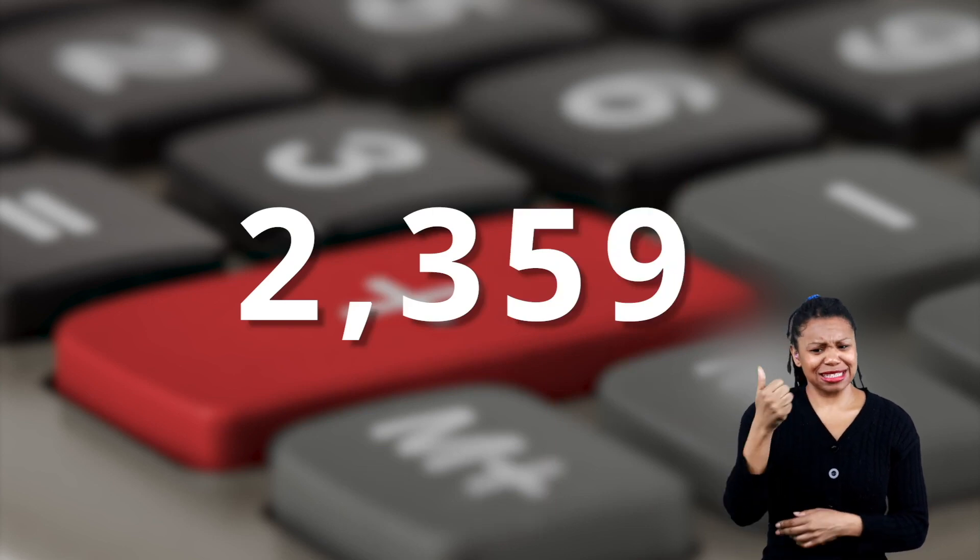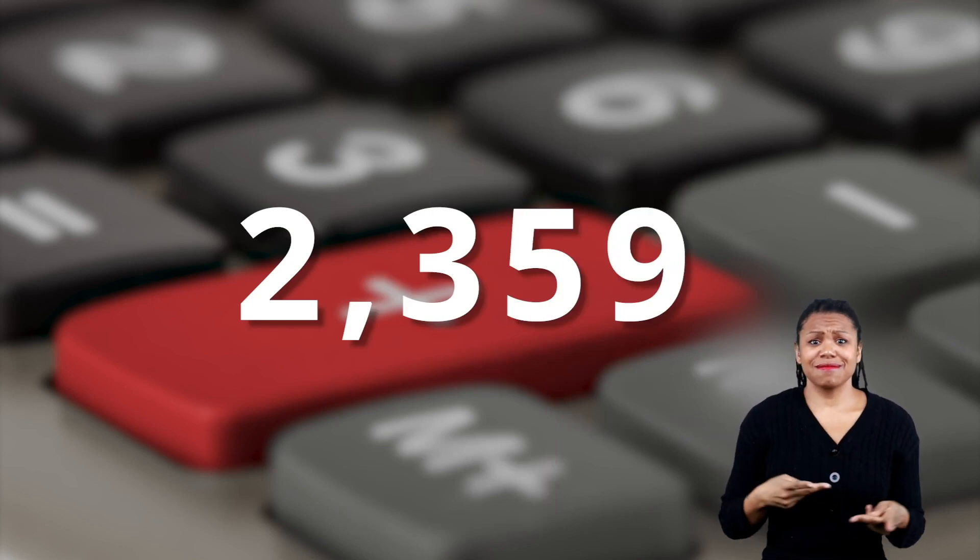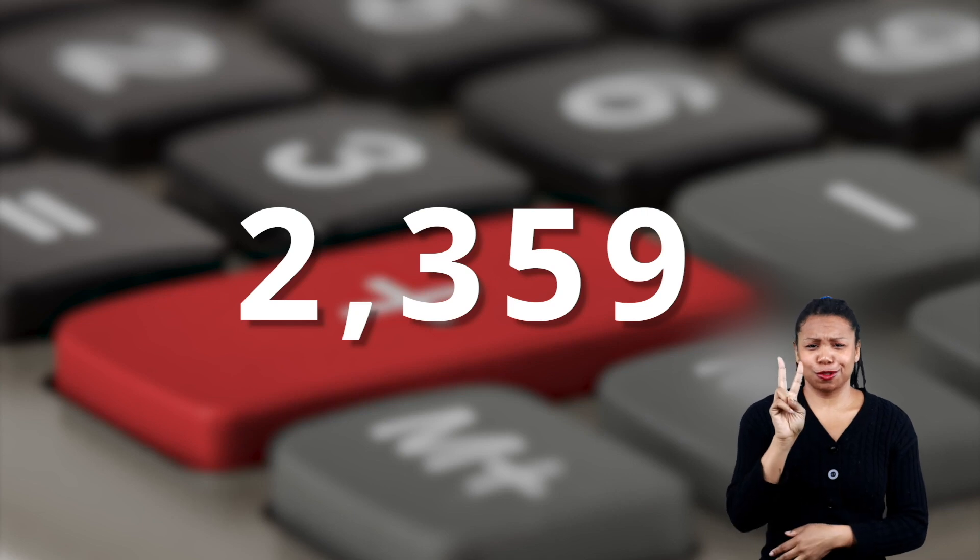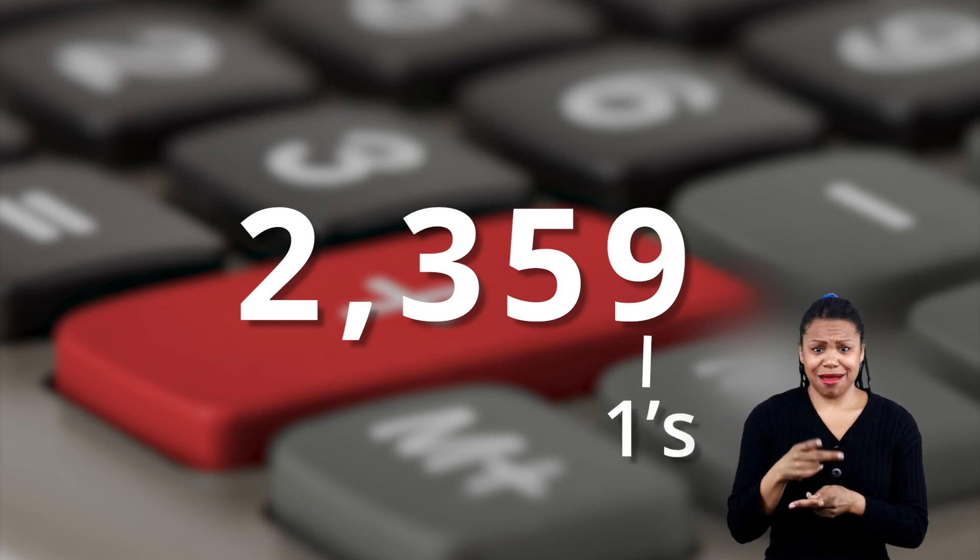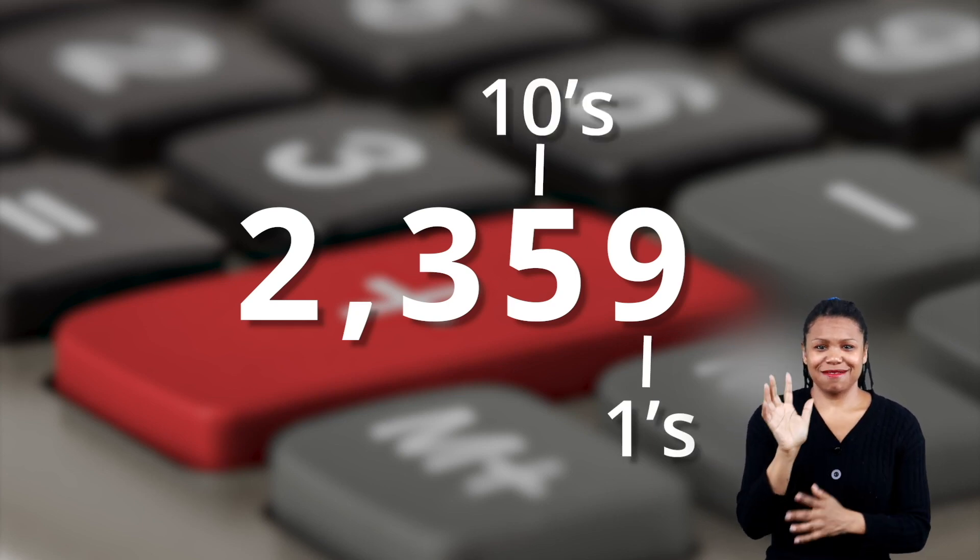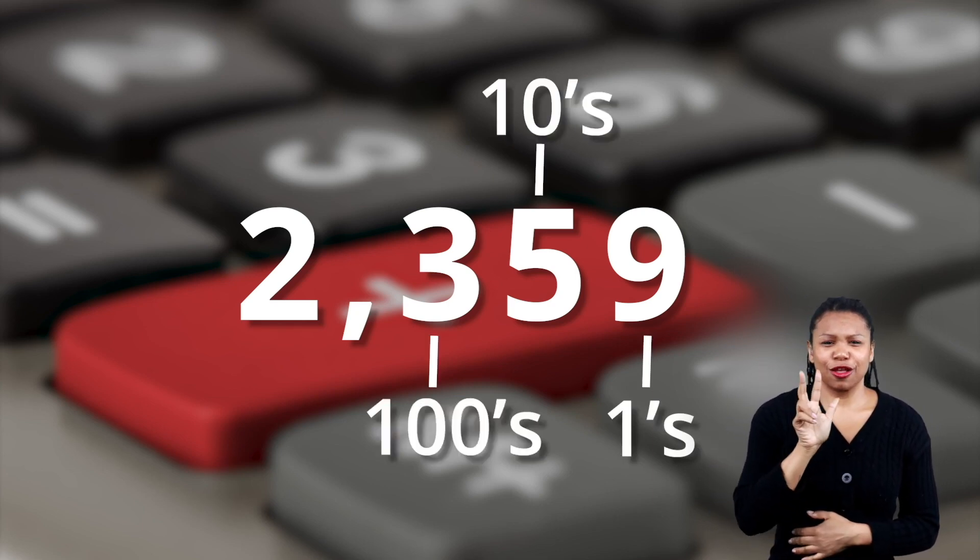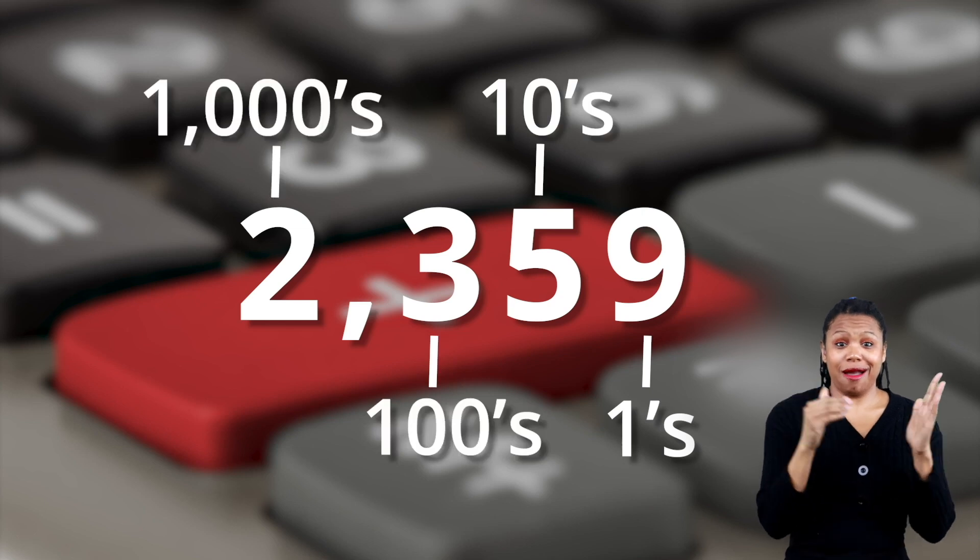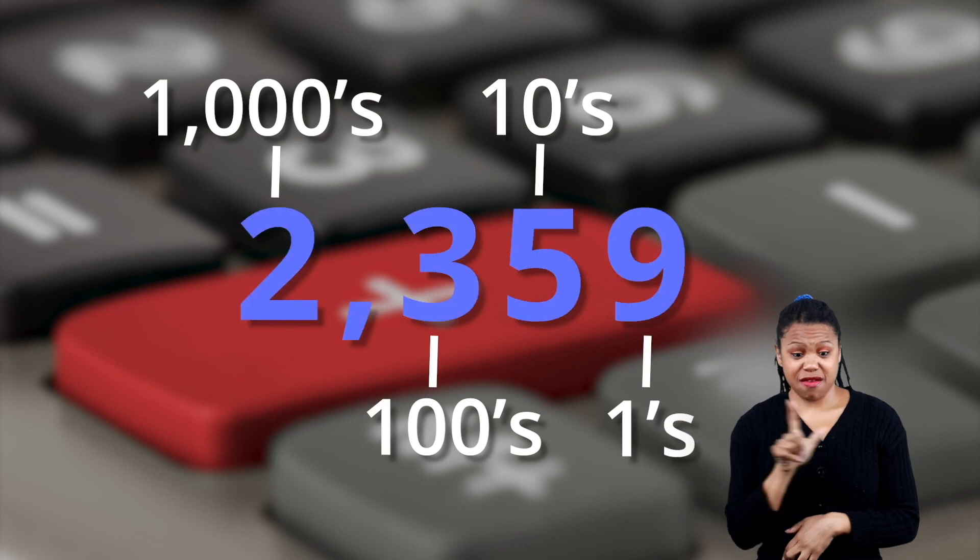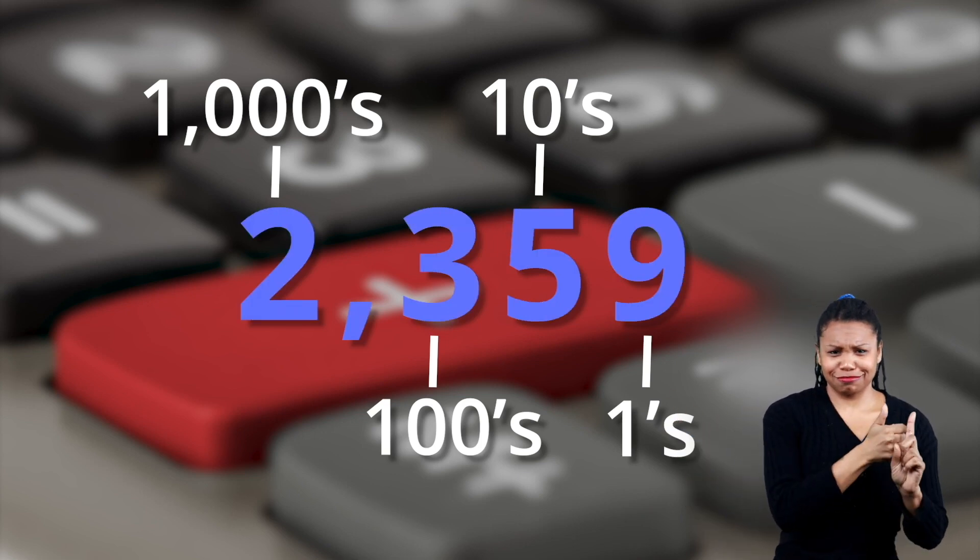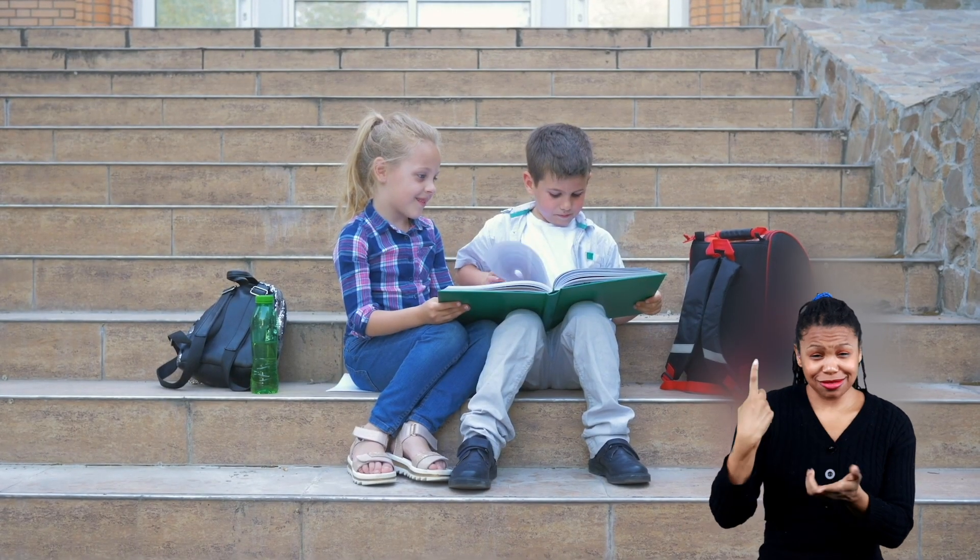Here's a quick description of what we mean by tens place and ones place. Take the number two thousand three hundred fifty-nine for example. In that number, nine is in the ones place, five is in the tens place, three is in the hundreds place, and two is in the thousands place. You read numbers from left to right. The further left you go, the larger the number.